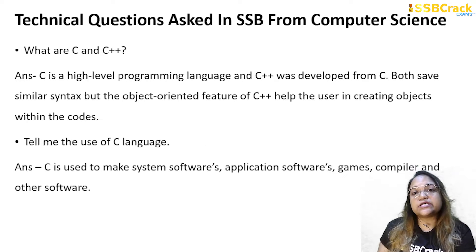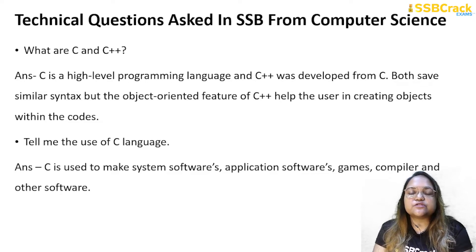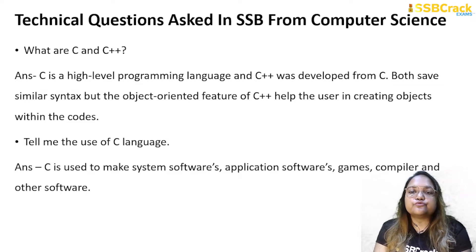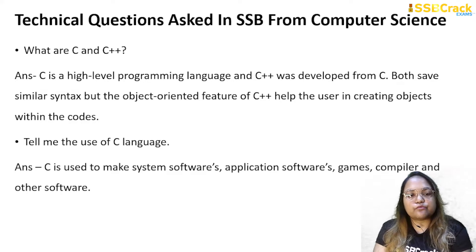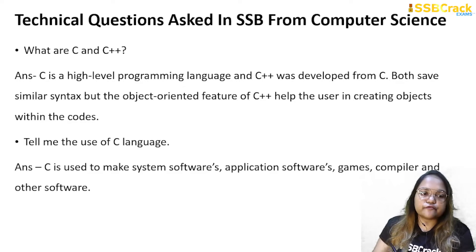What are C and C++? C is a high-level programming language and C++ was developed from C. Both share similar syntax but the object-oriented features of C++ help the user in creating objects within the code. Tell me the uses of C language. C is used to make system software, application software, games, compilers and other software.